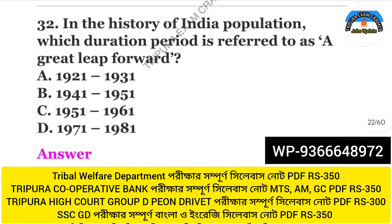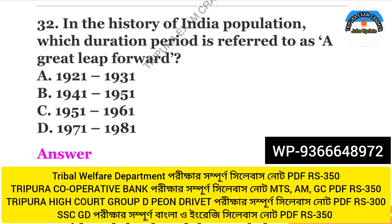The next question: in the history of India's population, which duration period is referred to as the 'great leap forward'? The answer is Option C: 1951 to 1961.